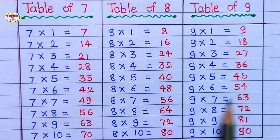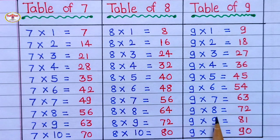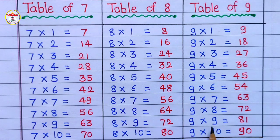9 7's are 63, 9 8's are 72, 9 9's are 81.